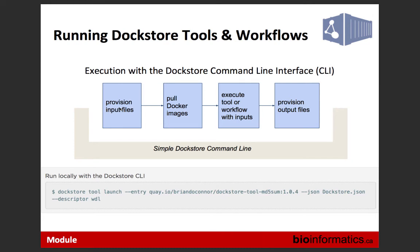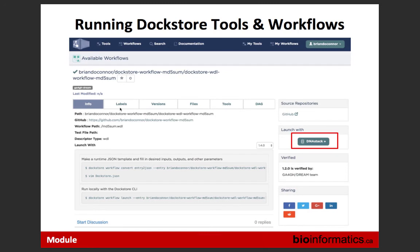One nice feature of the Dockstore command line is we've added file provisioning, so it can provision files to and from places on the cloud. The ICGC client has been integrated as a plugin. We're also partnering with companies to provide a convenient way to find something in Dockstore and take it to a platform that allows you to scale out to thousands of jobs. Our first commercial integration is with a company called DNAstack, which is next door to OICR in Toronto. They allow you to run WDL-based workflows on the cloud through a completely managed and very nice GUI.